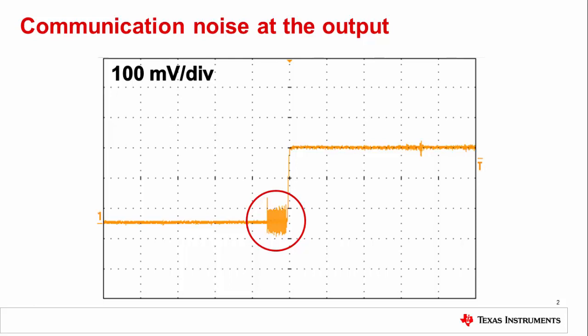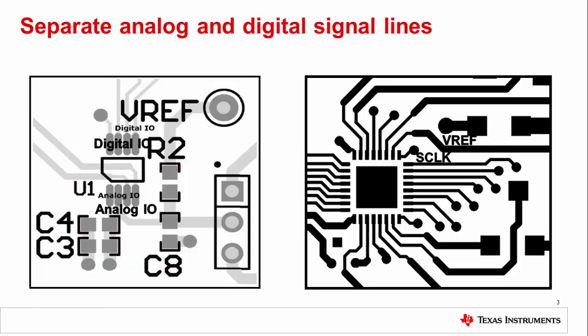A designer has significantly less control over the device feed-through in comparison to board feed-through. So the question now becomes, how do we fix it? Let's look at the first solution: keep the digital lines away from the analog lines.